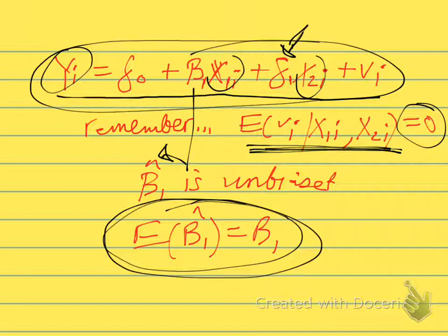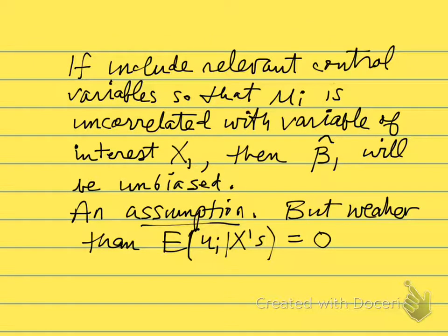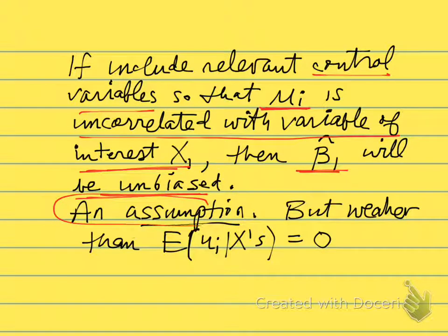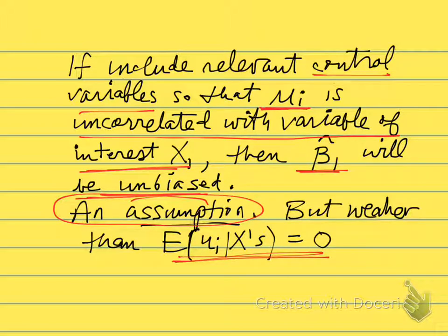So all we can say is that the coefficient on x1 — our variable of interest — is going to be unbiased. If we include relevant control variables in our regression so that the error term is uncorrelated with the variable of interest x1, then β̂₁ will be unbiased. This is an assumption we make when running and interpreting the regression, but it's weaker than assuming E[uᵢ | x1, x2] = 0. That's why conditional mean independence is a powerful assumption to be able to make.